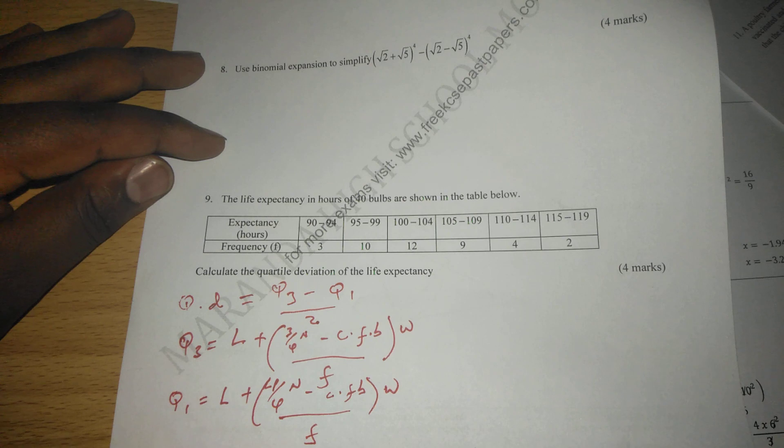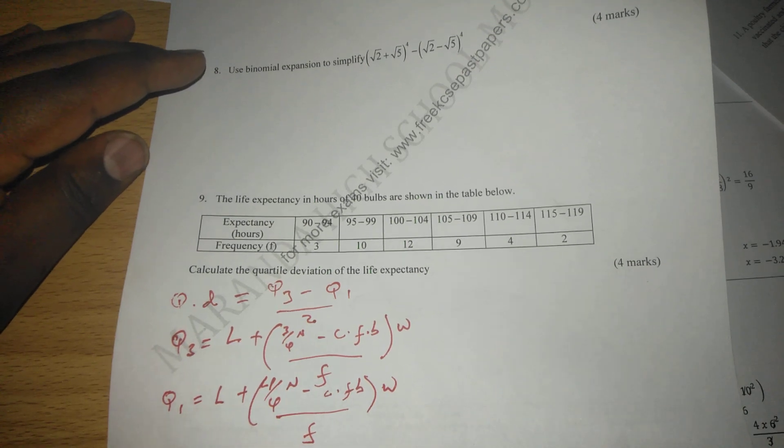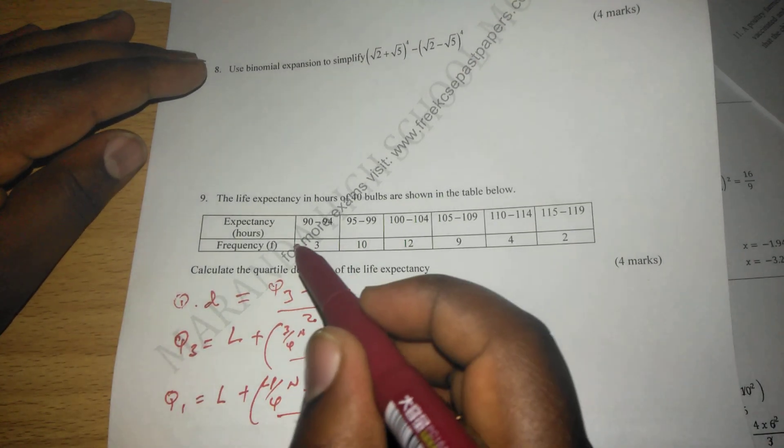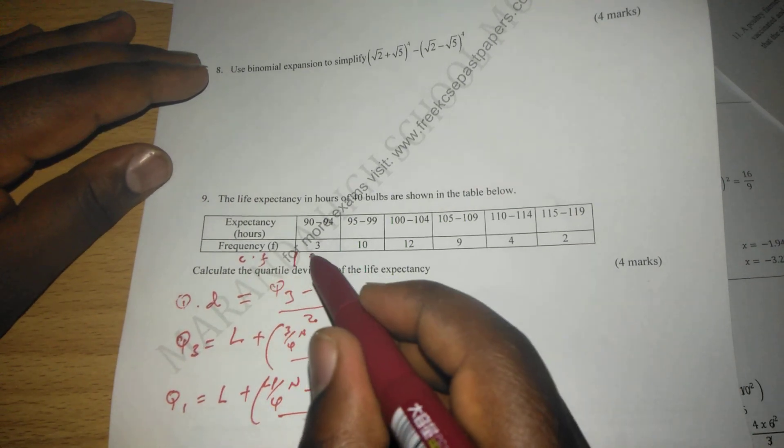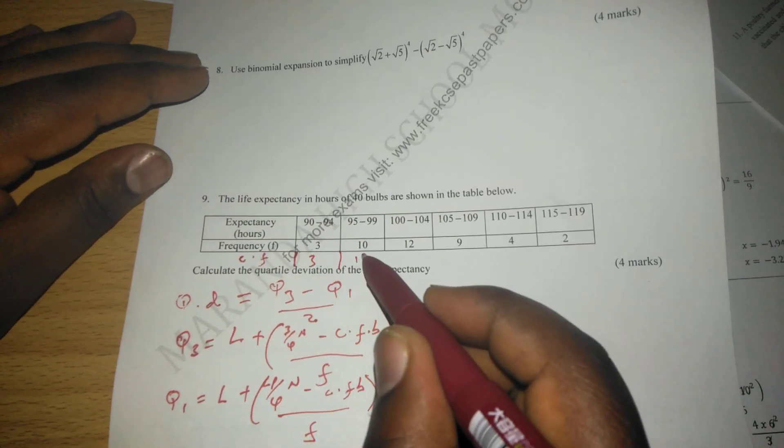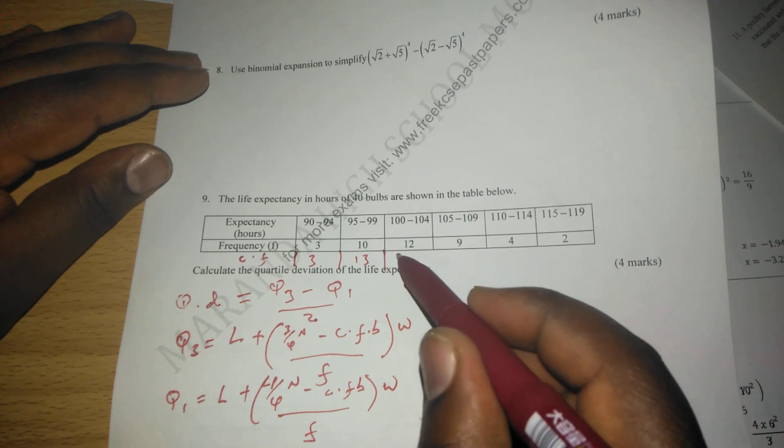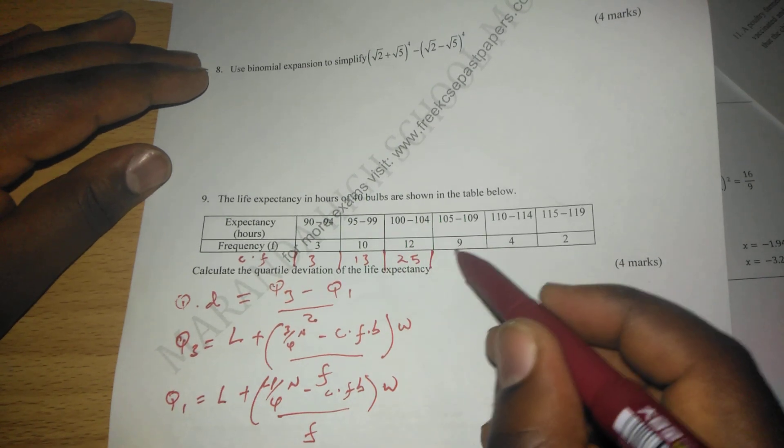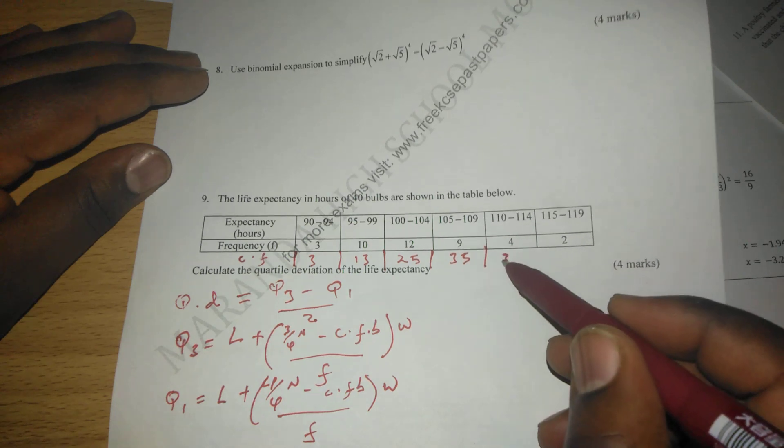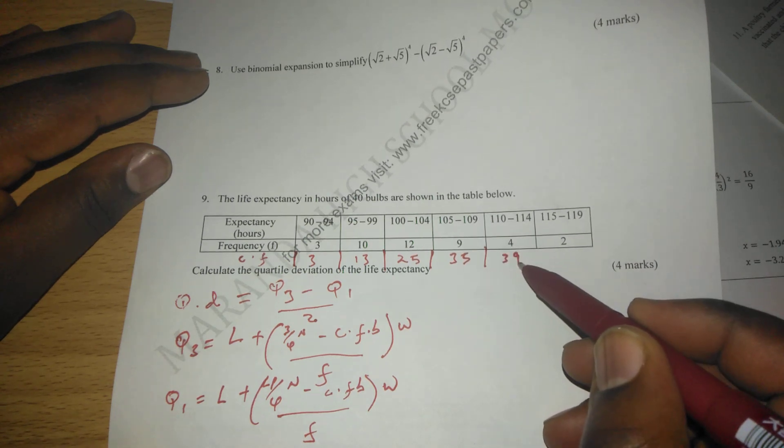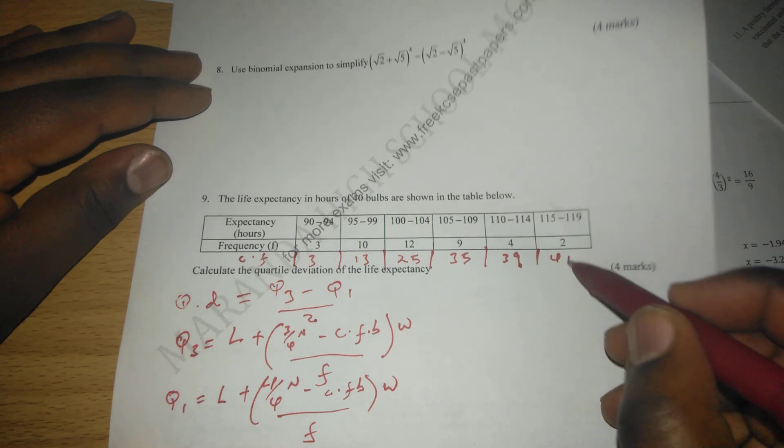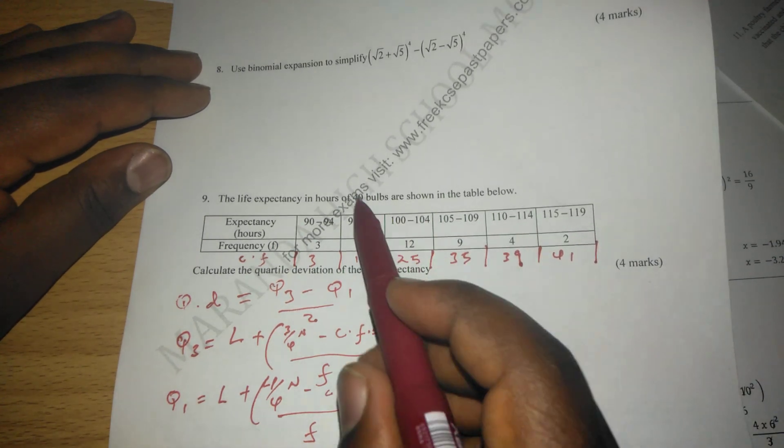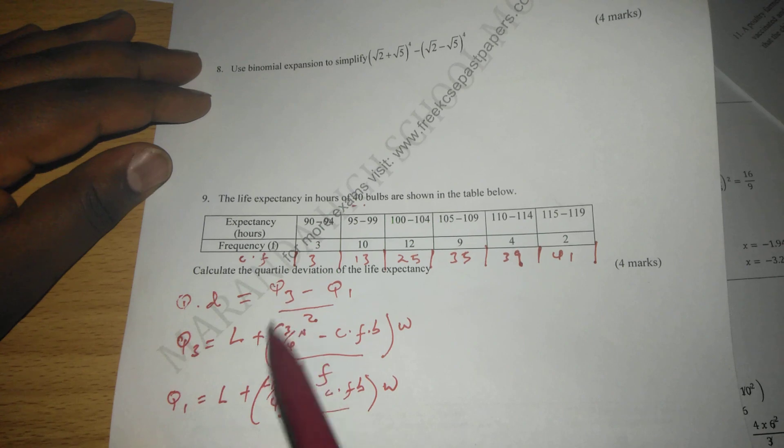So we first of all get cumulative frequency column here, whereby we start with 3, we go to 13, we go to 25, we go to 34, we go to 39, then we go to 41. Okay, the examiner said they are 40 bulls, we can confirm the accuracy here again.